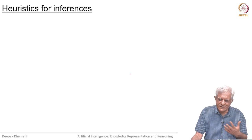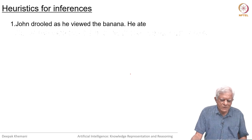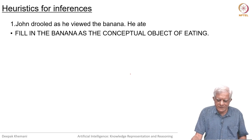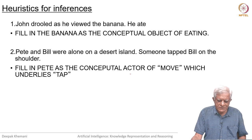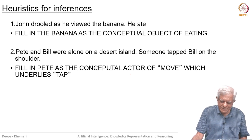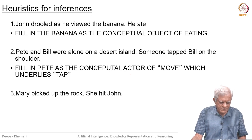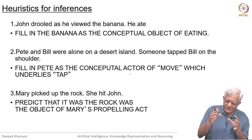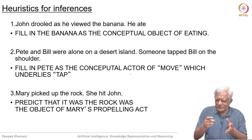What are the kinds of heuristics — by heuristics, you mean rules — that were in their system for making these inferences? John peeled the banana as he viewed it, he ate — fill the banana as the conceptual object of eating. Pete and Bill were alone on a desert island, someone tapped Bill on the shoulder — fill Pete as the conceptual actor of the move which underlies 'tap'. This whole idea is about expectations — empty slots in representations are expected to be filled, so if there is an empty slot for an actor, you pick one of the actors you know about.